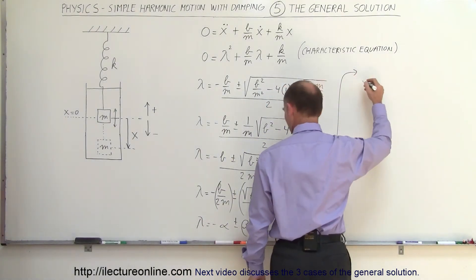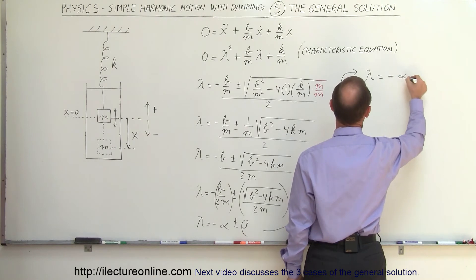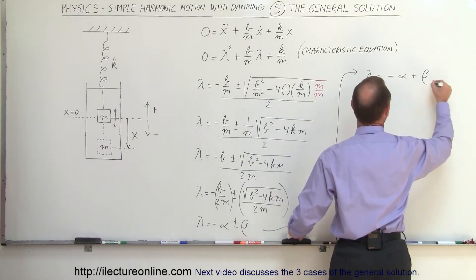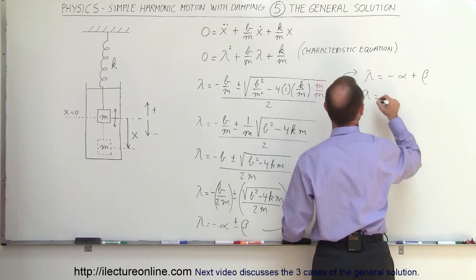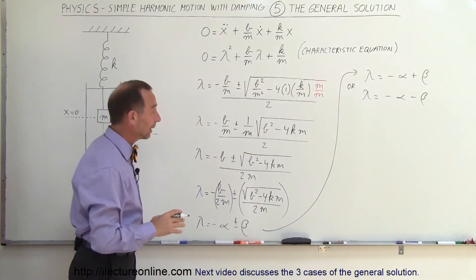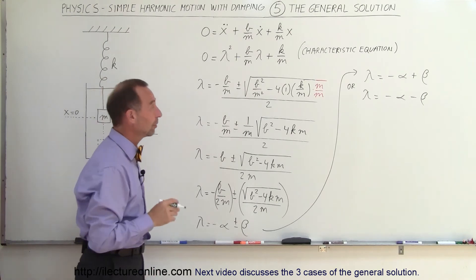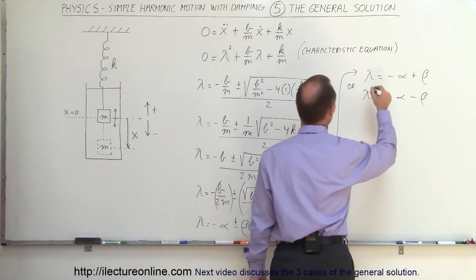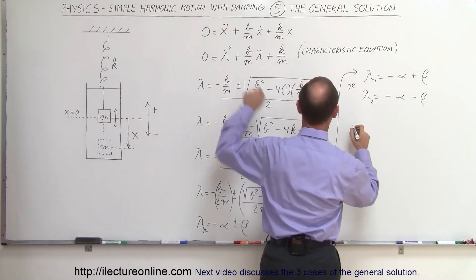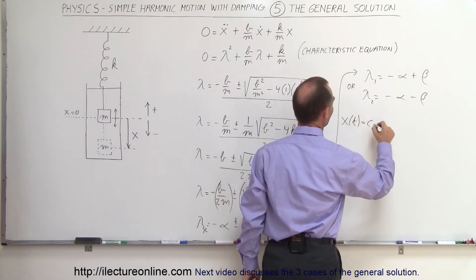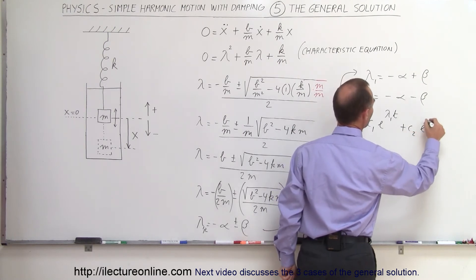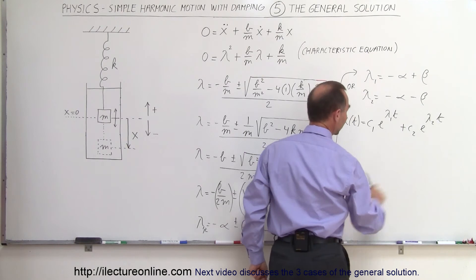So we can say lambda equals minus alpha plus beta, and the other solution is lambda equals minus alpha minus beta. Those are the two roots of the characteristic equation. Calling those roots lambda 1 and lambda 2, the general equation will be written as x as a function of time equals some constant c sub 1 times e to the root times t, plus c sub 2 times e to the second root times t.